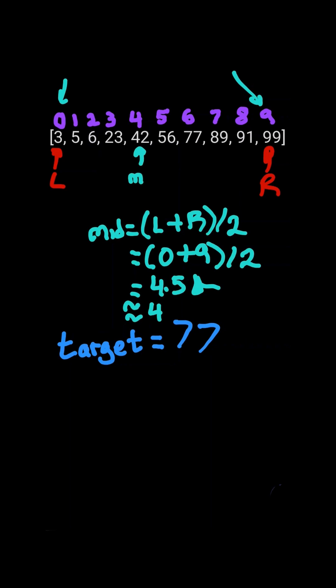Mid points to index 4 with value 42. Since 77 is greater than 42, it must appear to the right of 42. So we update our L pointer to M plus 1, and we will repeat the algorithm.